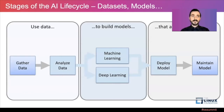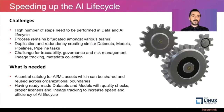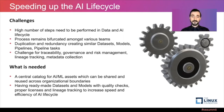For the stages of the AI lifecycle, we're really talking about data sets and models. We're using data to build models and those models are used to automate decisions. Each of these individual stages has multiple steps, and these individual steps are often performed by teams of data scientists, data engineers, and MLOps engineers. The process often remains bifurcated amongst various teams — there's lots of duplication and redundancy, with similar data sets and models being created.